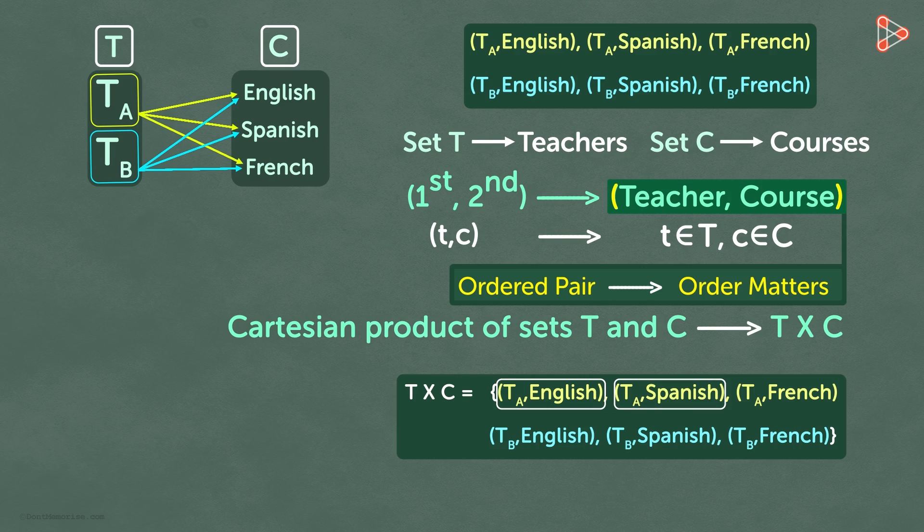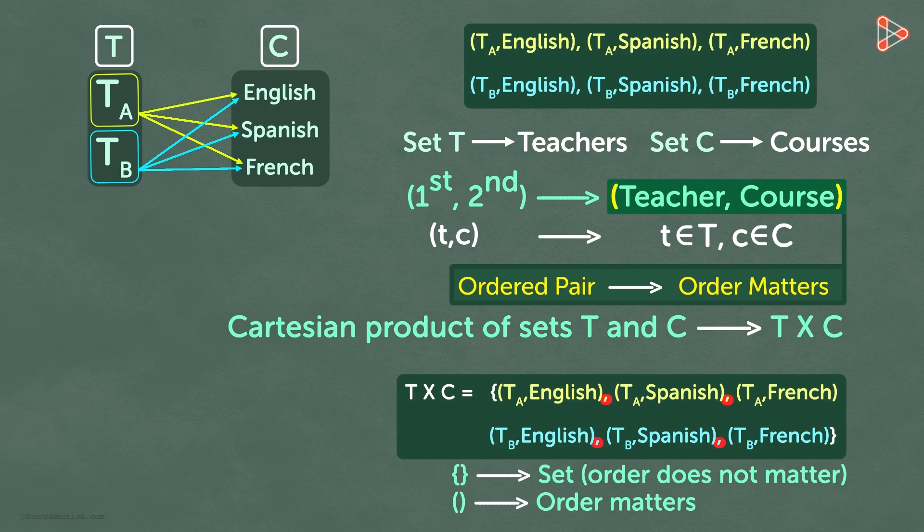Notice that the ordered pairs are enclosed in curly brackets and separated by commas. Remember that curly brackets are used to enclose elements in a set. Here, the order of elements does not matter, whereas the round brackets are used to enclose elements where the order matters.